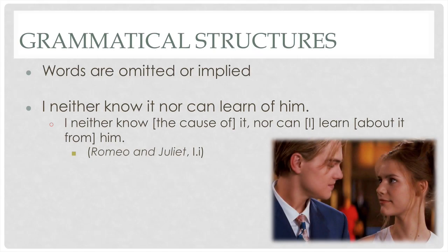Additionally, another grammatical structure we have to deal with is that sometimes words are omitted or implied. For example, from Romeo and Juliet: 'I neither know it nor can learn of him' really means 'I neither know the cause of it, nor can I learn about it from him.' You have to look at that and figure out who's actually doing the action, what they're doing, and who is receiving it — doing some inferencing when he has left out words in order to make the sentence make sense.